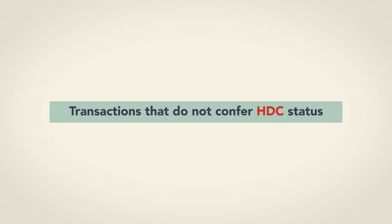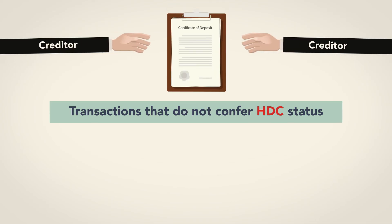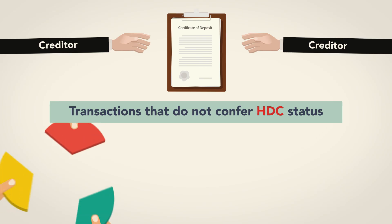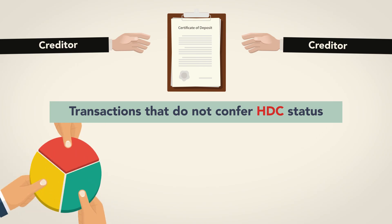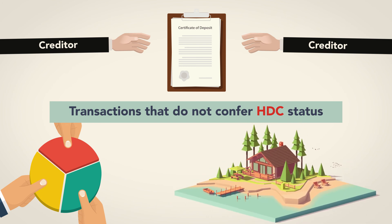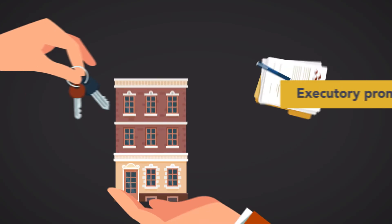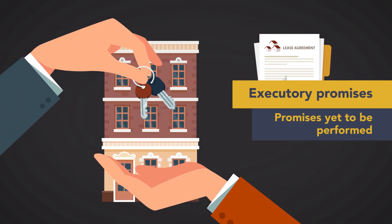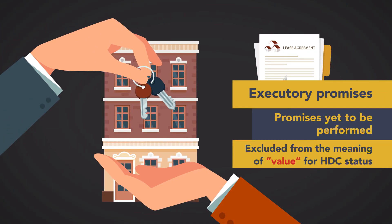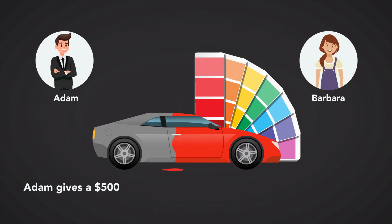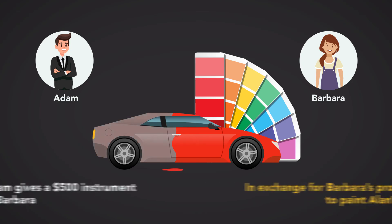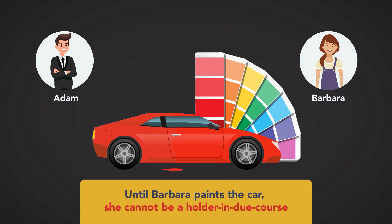Certain types of transactions do not confer HDC status, meaning that these recipients are not protected. These include creditors' proceedings, as when a note is seized to satisfy the debts of the holder; bulk sales, as when many instruments are packaged as a security and sold by investment banks; and inheritances or successors to an interest in an estate. Executory promises, which are promises yet to be performed, are also excluded from the meaning of value for HDC status. So if Adam gives a $500 instrument to Barbara in exchange for Barbara's promise to paint Alan's car, until Barbara paints the car, she cannot be a holder in due course.